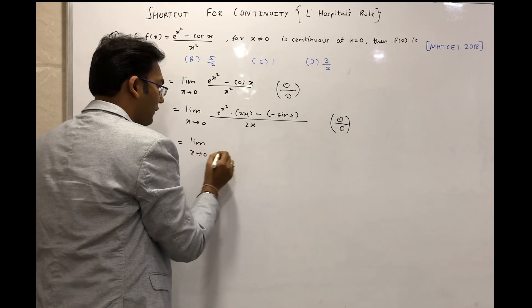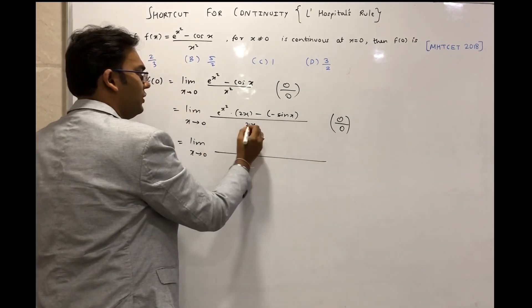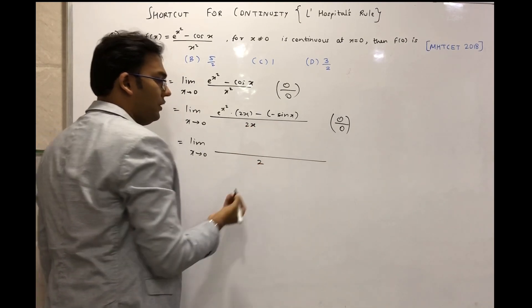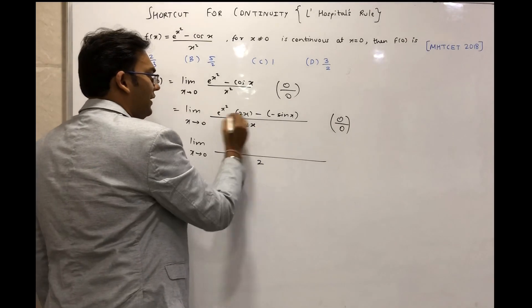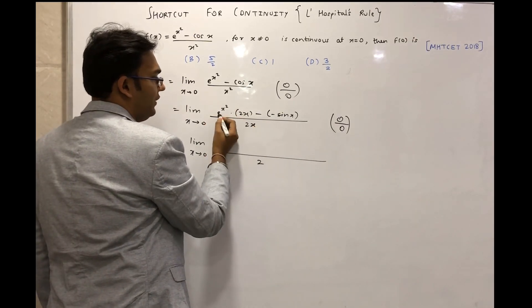So taking the derivative of numerator and denominator now. Let us do the derivative of denominator first. Derivative of 2x is simple, that is 2, and derivative of numerator will have to take u times v.